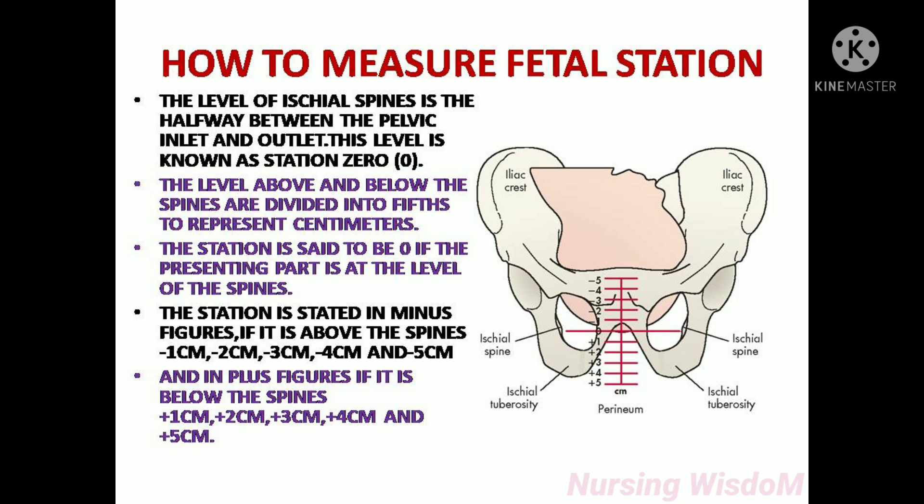The level of the ischial spine is the halfway point between the pelvic inlet and outlet. This level is known as station zero. The levels above and below the spines are divided into fifths to represent centimeters. The station is said to be zero if the presenting part is at the level of the spines. The station is stated in minus figures if it is above the spines.